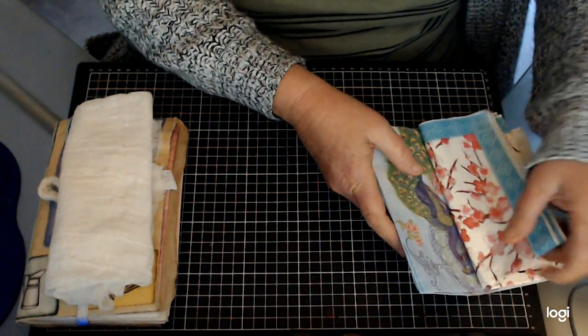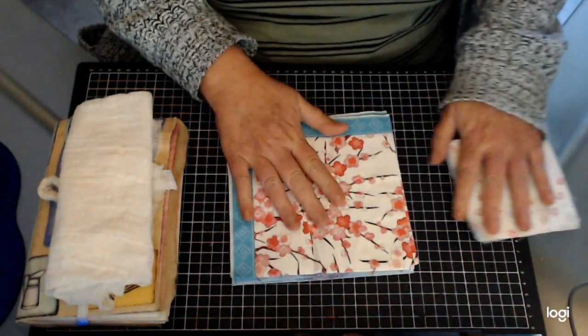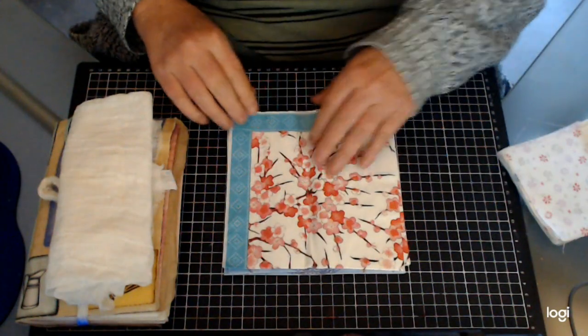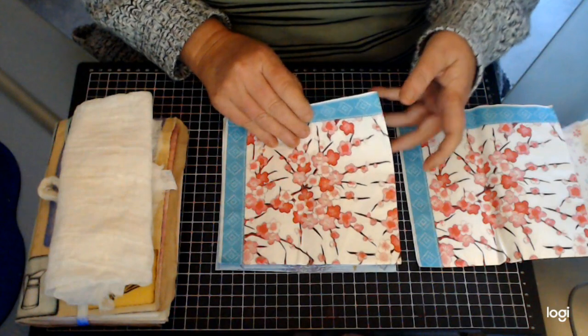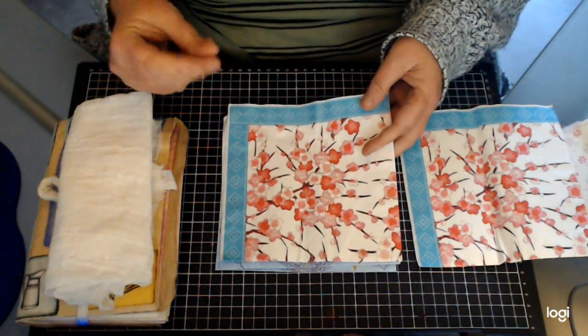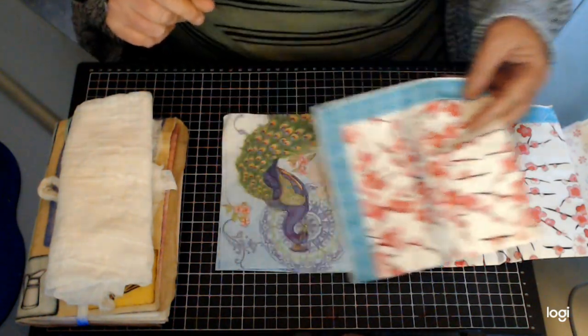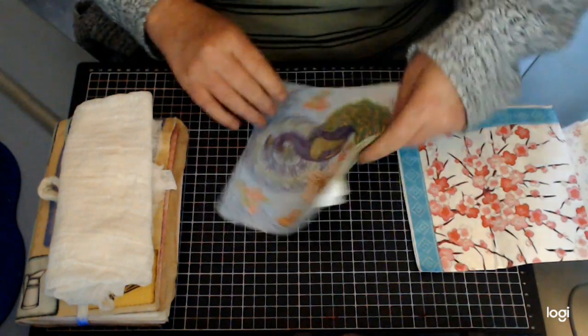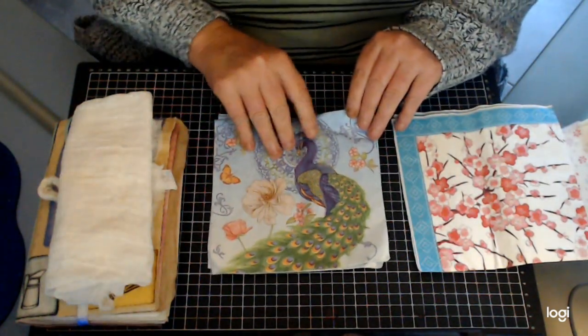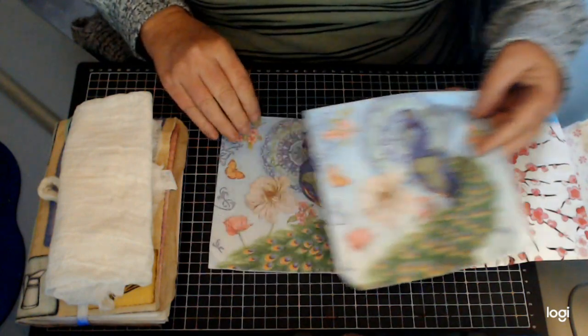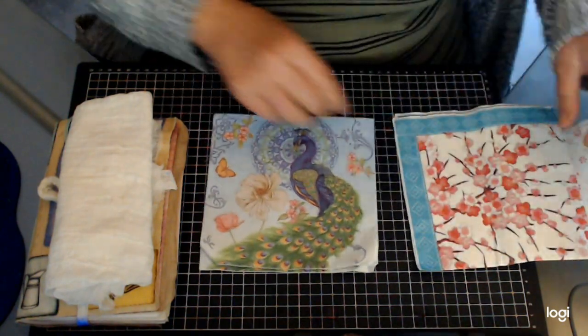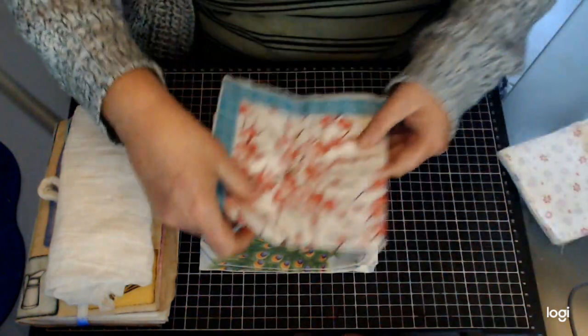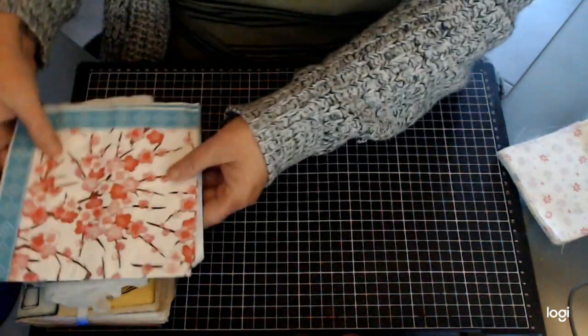Also some lovely napkins. So I've got two of the cherry blossom napkins and two of the pick up napkins. So that's four napkins all up. That's a part of the giveaway.